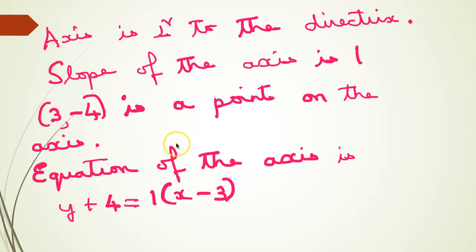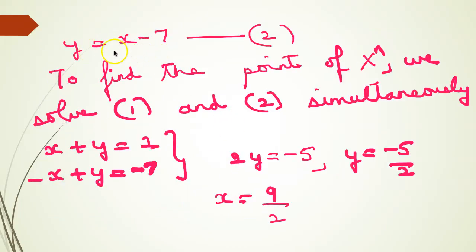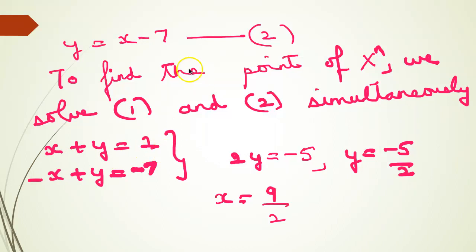The point (3, -4) lies on the axis because it is the focus. So we have a point on the axis and the slope. Using point-slope form: y + 4 = 1 × (x - 3), simplifying gives y = x - 7. This is the equation of the axis. To find the point of intersection of the directrix and the axis, we solve x + y = 2 (directrix) simultaneously with the equation of the axis.